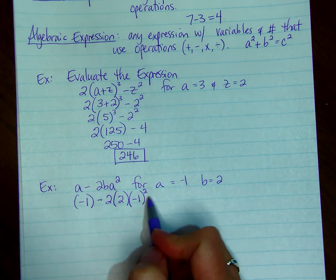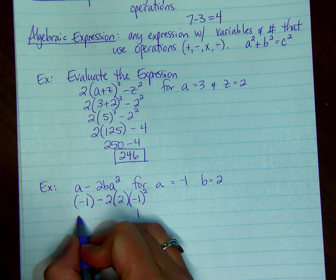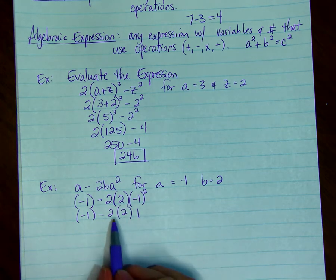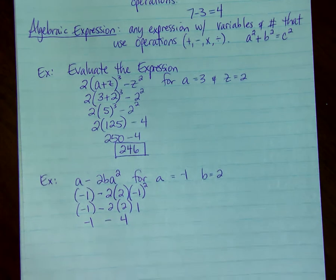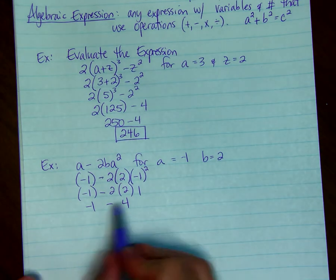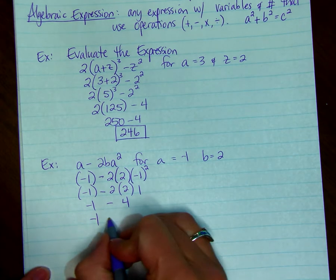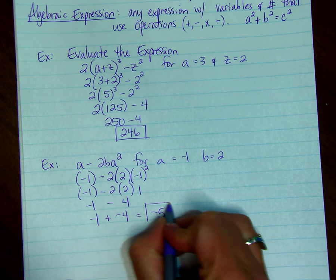Negative 1 squared is just equal to 1. And we have negative 1 minus 2 times 2 times 1. 2 times 2 times 1 is 4. Negative 1 minus 4. You can think of the subtraction as an addition problem, and it would be negative 1 plus a negative 4, and the answer is negative 5.